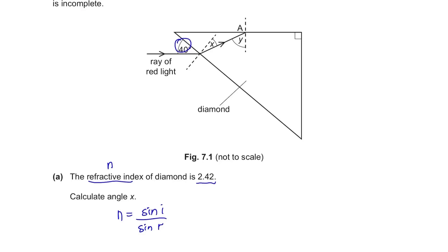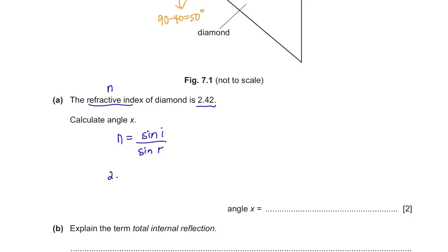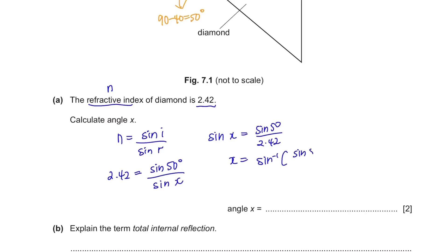Be careful — 40 degrees shown is not the incident angle. The incident angle is between the ray and the normal. Since the normal and the surface always make 90 degrees, the angle of incidence is 90 minus 40, which equals 50 degrees. The angle of refraction is x. So: 2.42 equals sine 50 degrees over sine x. Then sine x equals sine 50 over 2.42. x equals sine inverse of (sine 50 divided by 2.42), giving approximately 18.45 degrees. Rounded to 18 degrees.